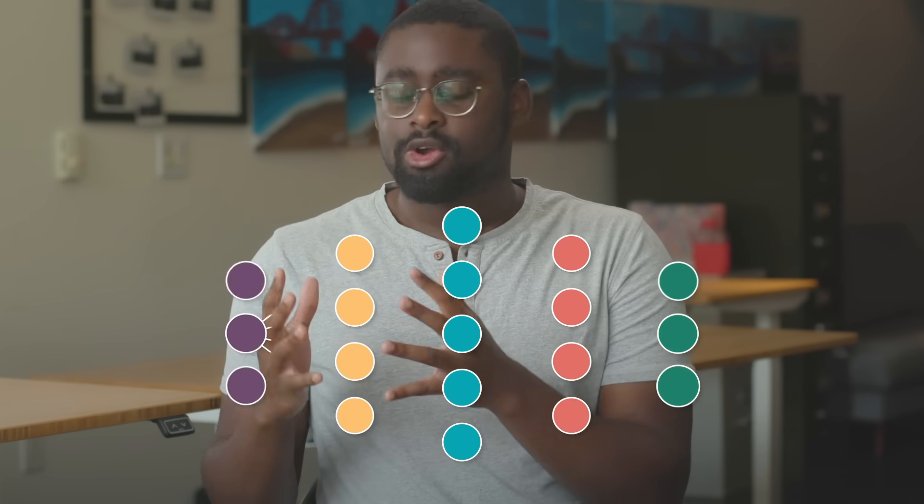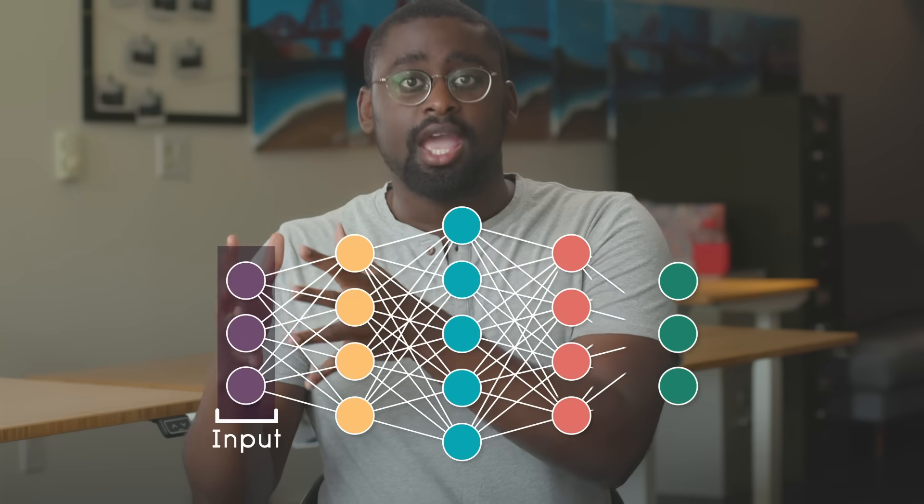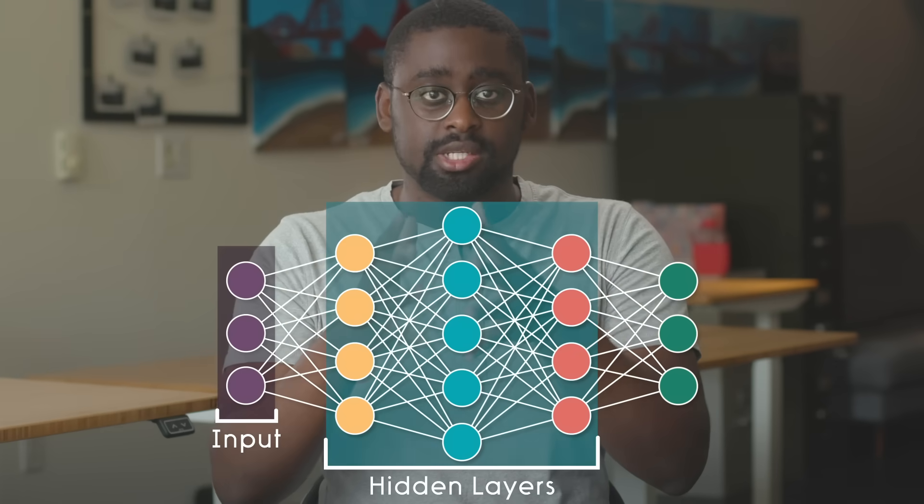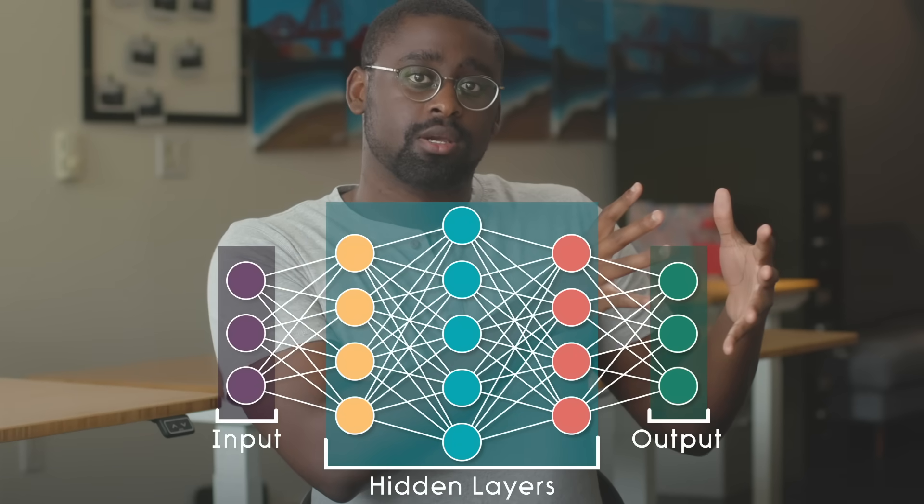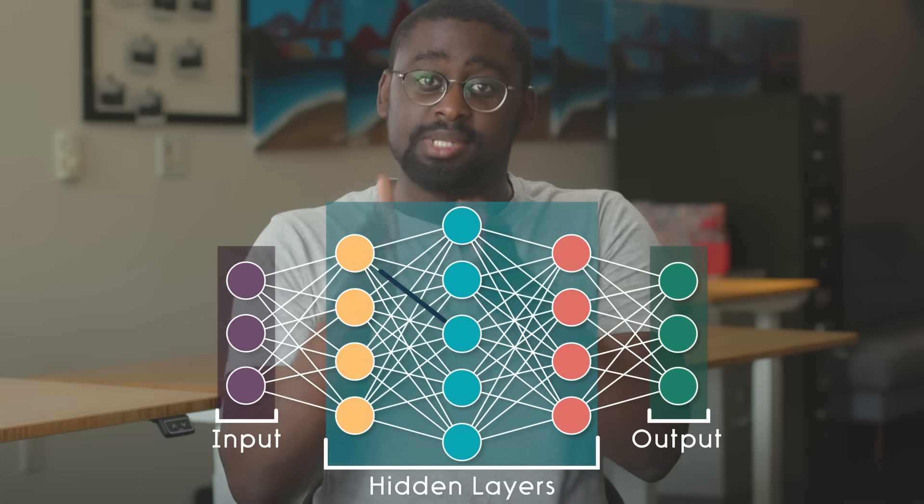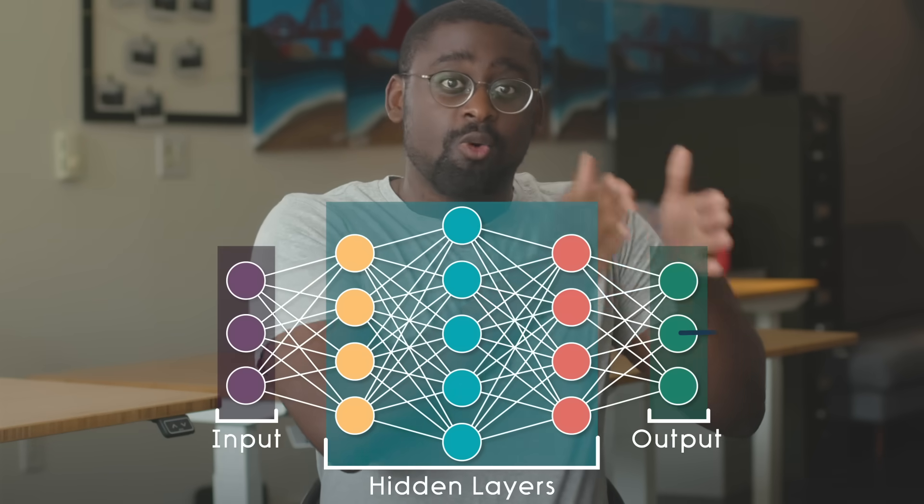In this example, there's just one neuron. That's far more simplistic than most systems. Powerful neural networks have millions of neurons arranged in layers. There are input layers, any number of hidden layers, and output layers. The output of one layer of neurons becomes the input to the next layer, and so on.